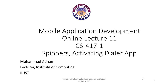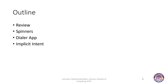Bismillahirrahmanirrahim. Dear students, assalamualaikum. We are on online lecture number 11 of the mobile application development course. Today we are going to once again discuss spinners, and we are going to develop a new app called dialer app. We are going to use implicit intent to activate the dialer app. First we are going to review what we have studied so far, then implement a callback method of the spinner object, and then discuss the dialer app and implicit intents.